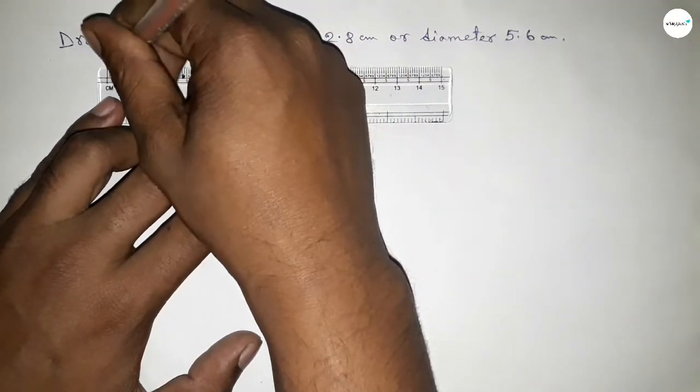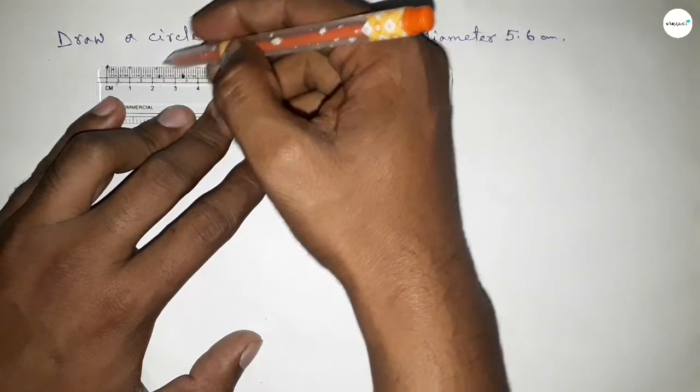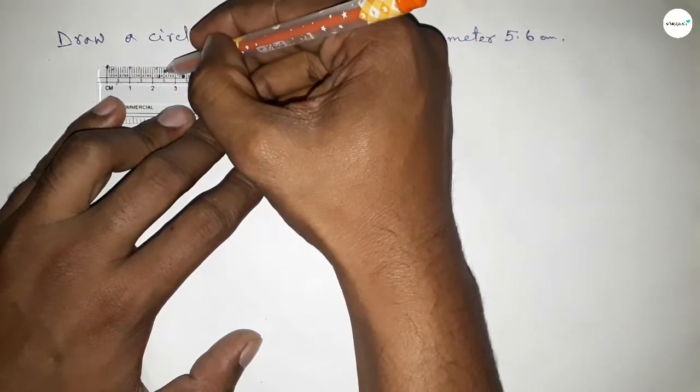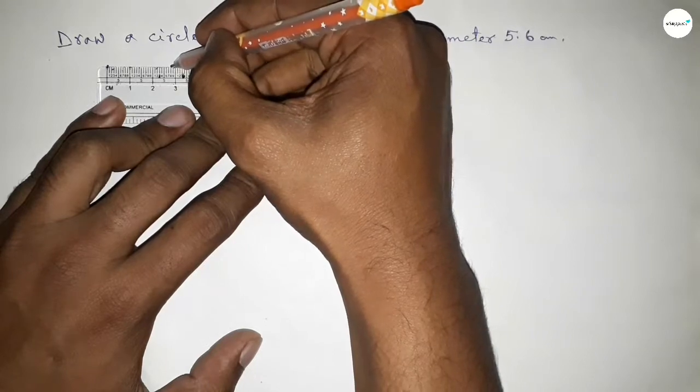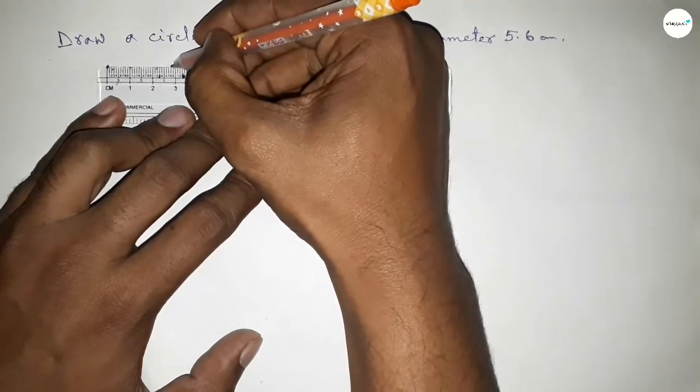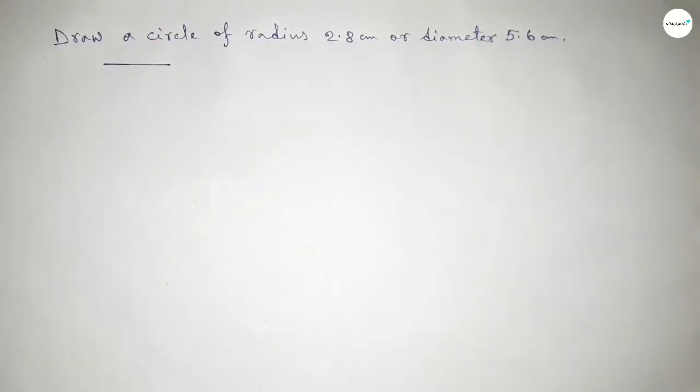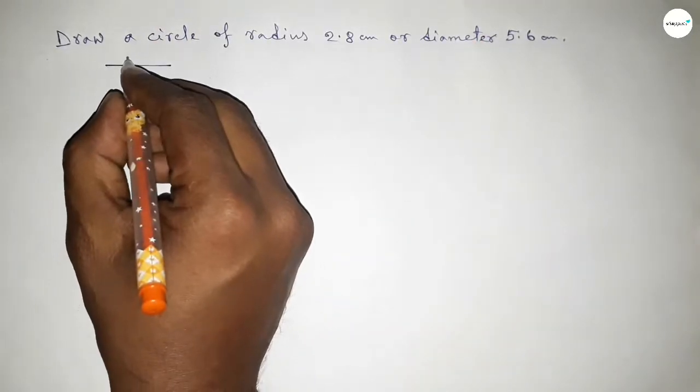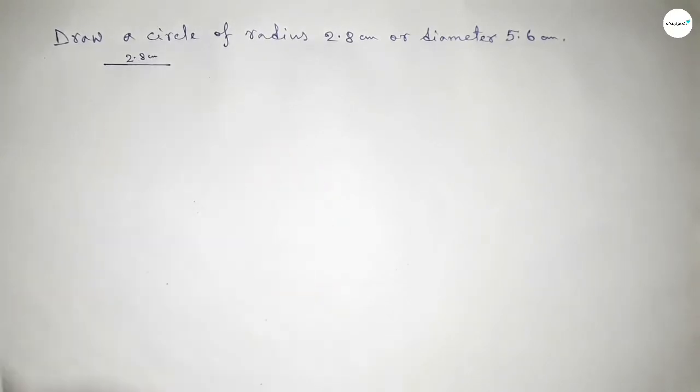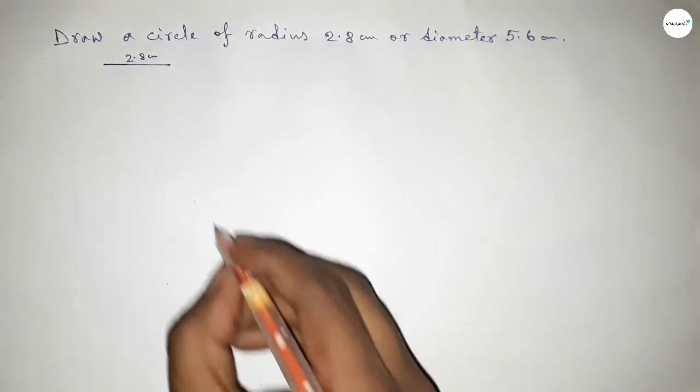This is starting 0, 1, 2, this is 5, 2.5, 6, 7, 8, so this is 2.8 centimeters. We know that the radius of a circle is half of the diameter, so this is 2.8 centimeters. Now taking here a point.